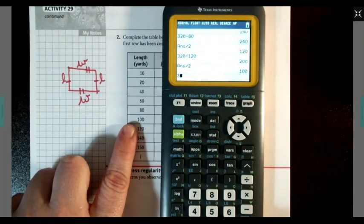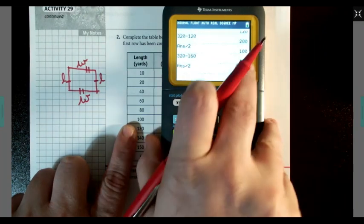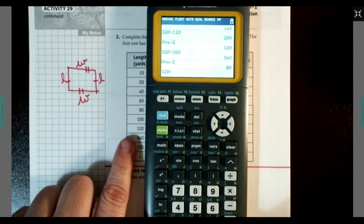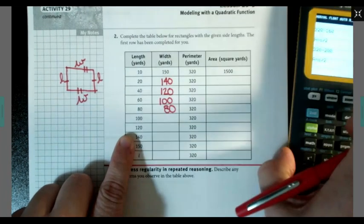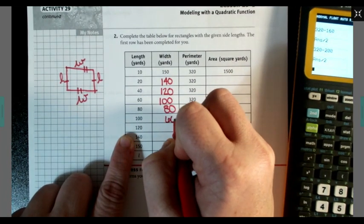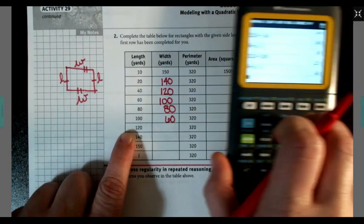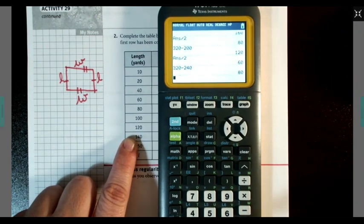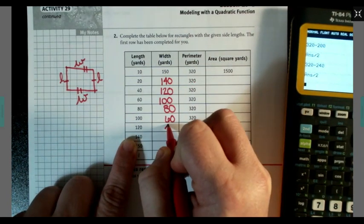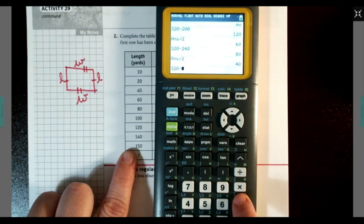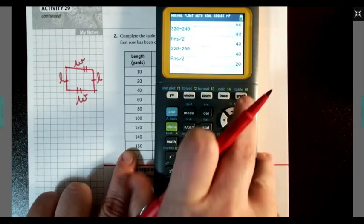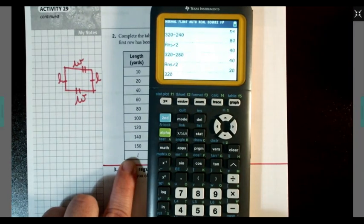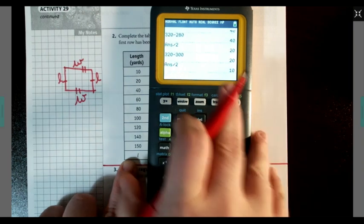This time we got 80. So I got 320 minus 160 divided by 2 is 80. 320 minus 200 divided by 2 is 60. 320 minus 240 divided by 2 gives me 40 here. 320 minus 280 divided by 2 is 20. 320 minus 300 divided by 2 is 10.